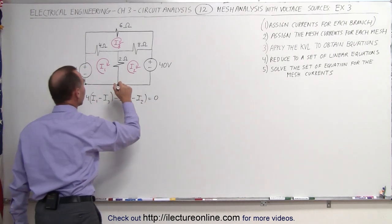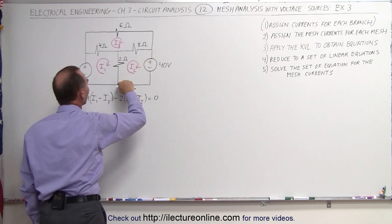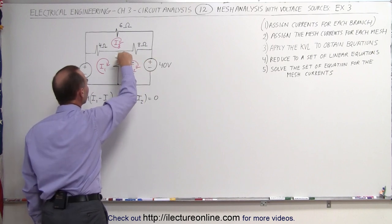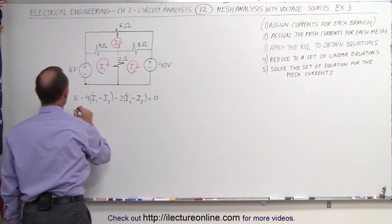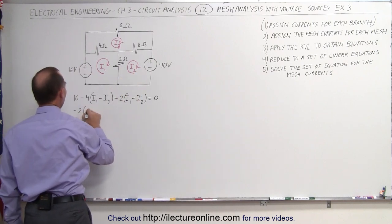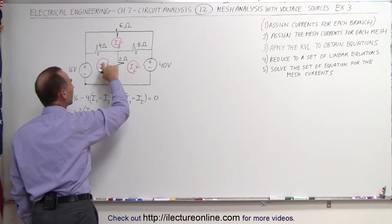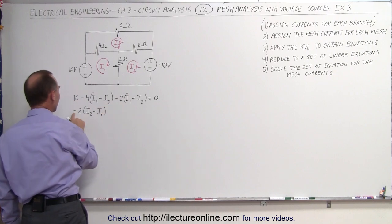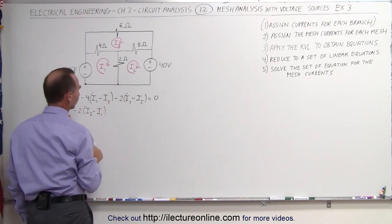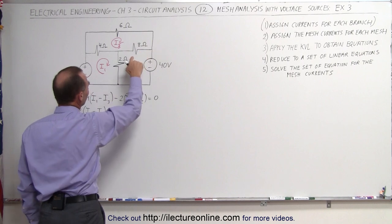Second equation. Let's start at this corner right here and go around the loop this way. From here to there is a voltage drop relative to I2: minus 2 times I2. But then I have to subtract I1 from it because it'll be a voltage rise relative to I1 — minus I1. Again, this minus times this minus makes it a plus.